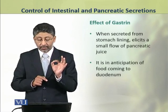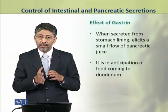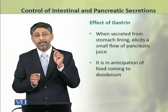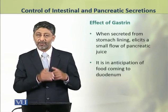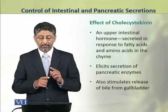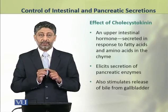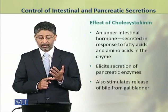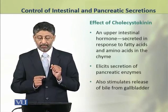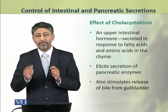When gastrin is secreted from the stomach lining, it starts a slow flow of pancreatic juice in anticipation of the food coming to the duodenum. Cholecystokinin also affects pancreatic juice secretion. It is an upper intestinal hormone secreted in response to fatty acids and amino acids in the chyme, and it elicits secretion of pancreatic enzymes. It also stimulates the release of bile from the gall bladder.